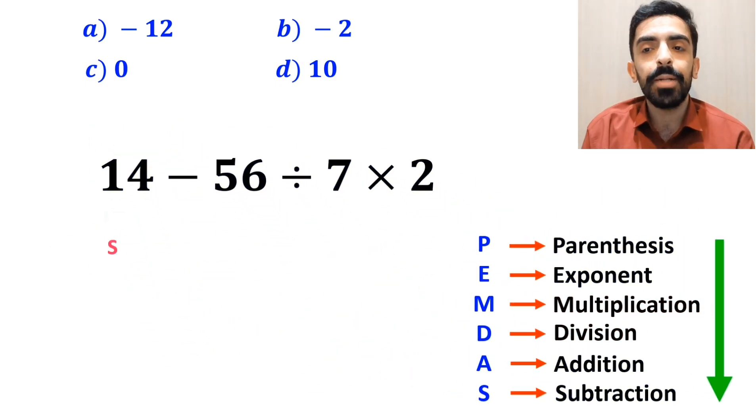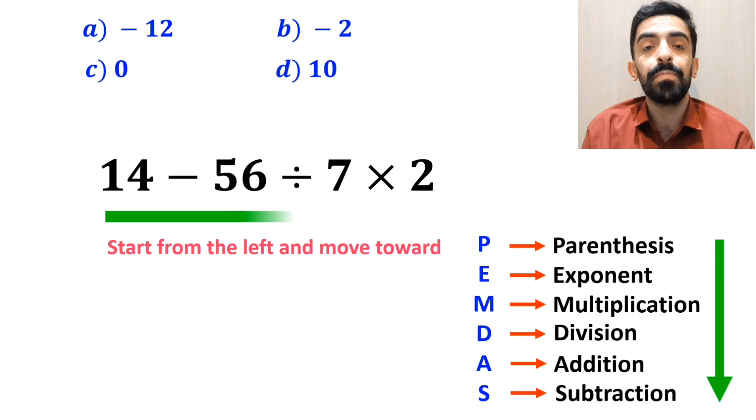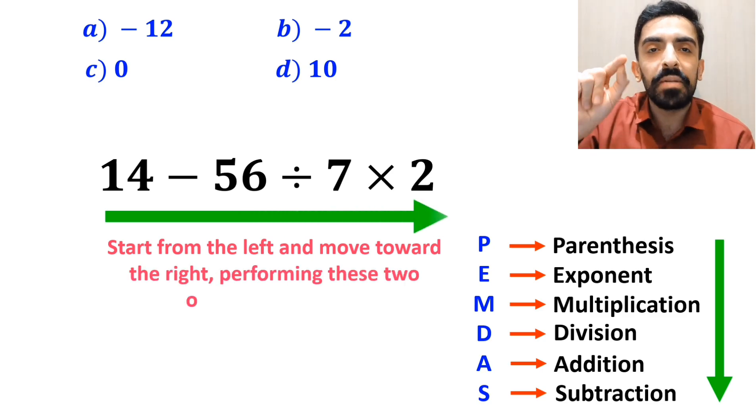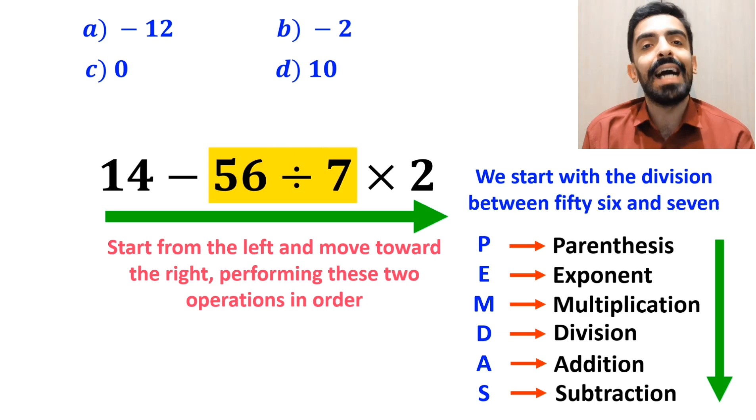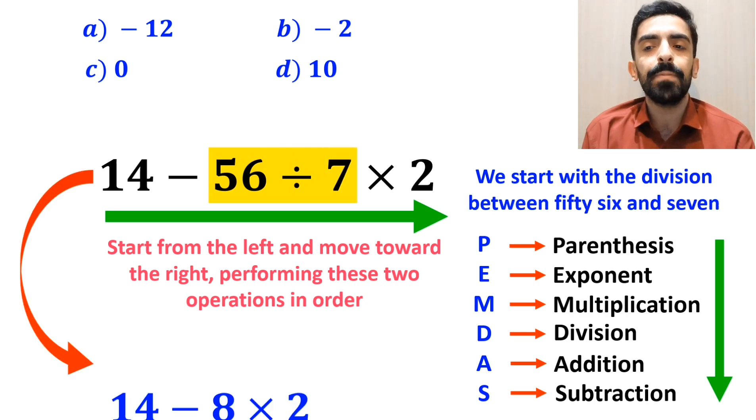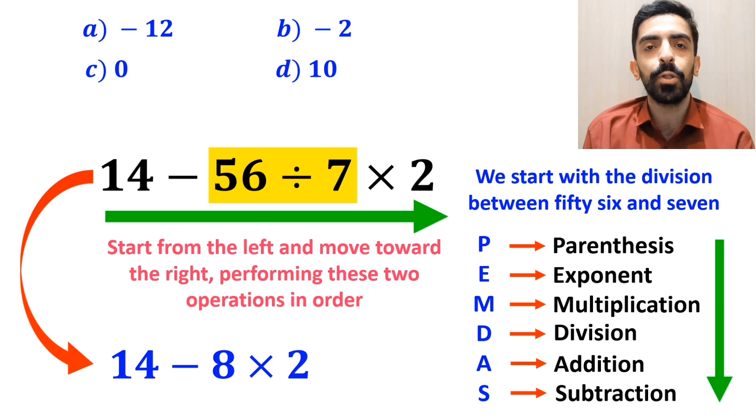In this situation, the best approach is to start from the left and move toward the right, performing these two operations in order. So, first we start with the division between 56 and 7, which simplifies this expression to 14 minus 8 multiplied by 2.